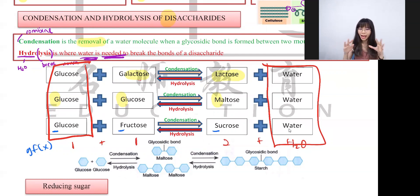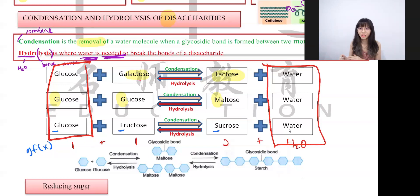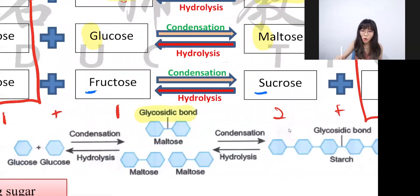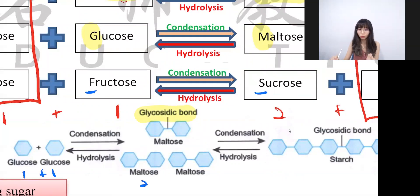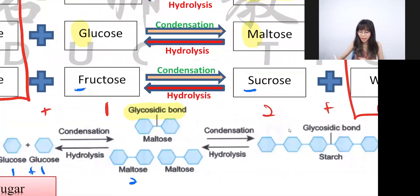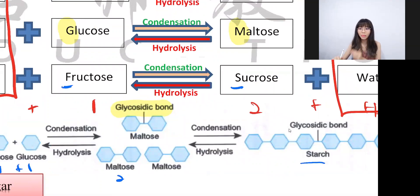When two monosaccharides combine, they must form a bond — like holding hands in a relationship. This bond is called a glycosidic bond. One plus one equals two, forming maltose from two glucose units. Many maltose units together form starch. So mono can become di, di can become poly, and poly can break down to di, then to monosaccharides — by using enzymes or diluted hydrochloric acid.